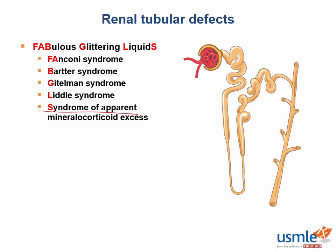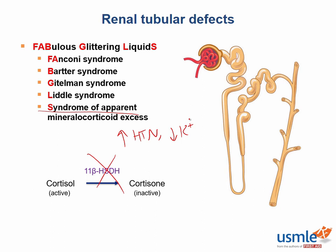In SAME, or syndrome of apparent mineralocorticoid excess, there is a hereditary deficiency of 11-beta-hydroxysteroid dehydrogenase, which normally converts cortisol to cortisone in cortisol-sensitive cells. If this enzyme is absent, excess cortisol will activate mineralocorticoid receptors, causing increased sodium uptake at the expense of potassium, and water follows sodium. Therefore, SAME results in hypertension and hypokalemia, as well as metabolic alkalosis. Interestingly, this can be an acquired disorder if you eat too much licorice, which blocks this enzyme's activity.